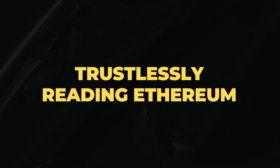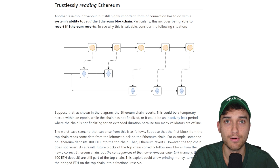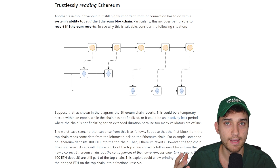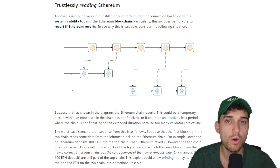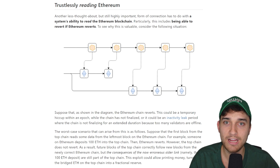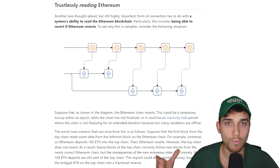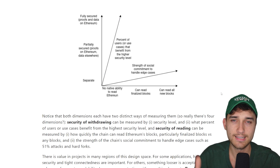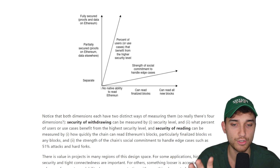The final section of Vitalik's blog post covers the chain's ability to trustlessly read data from Ethereum. The different kinds of L2s differ in what information they read from Ethereum and how often they do it, as well as how they handle edge cases such as a 51% attack or a hard fork on Ethereum — and how they react and change based on what's happening on Ethereum at the L2 level. This section goes pretty in-depth into bridges, but my key takeaway was from this chart.